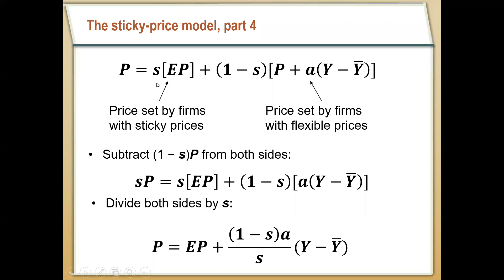If we have a lot of firms with sticky prices — if S is very high — then P and EP are going to be very similar. If a lot of firms have flexible prices, more firms can respond to different output changes. Solving this expression for P gives us that the price level equals the expected price level plus a coefficient times output minus potential output. So if expected prices are very high, that drives up the price level; if output is very high, that also drives up the price level — it's simply the sum of expected prices and the deviation of output from potential times this coefficient.